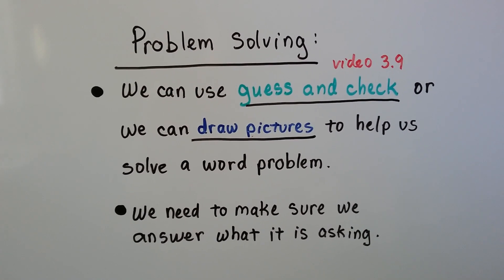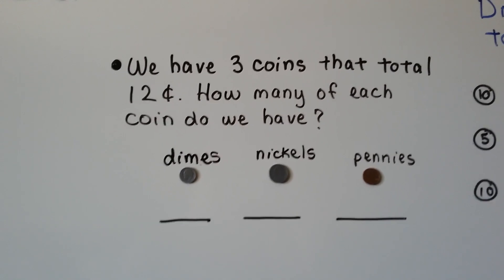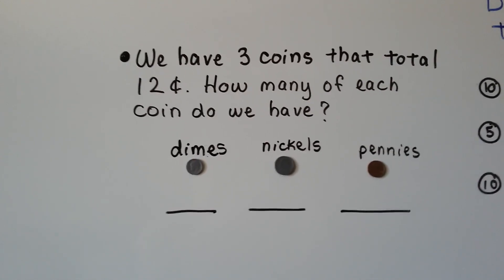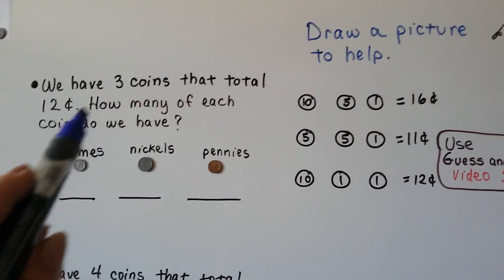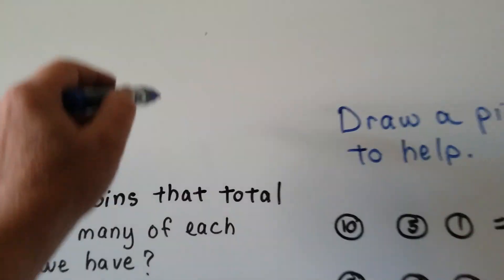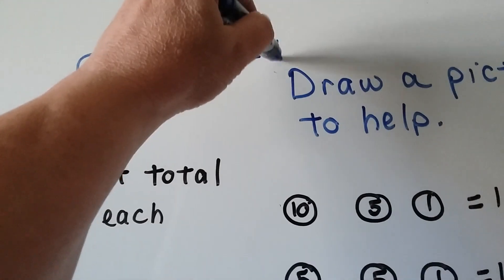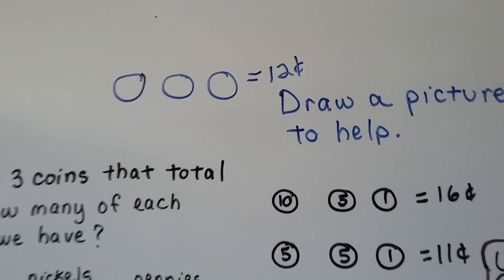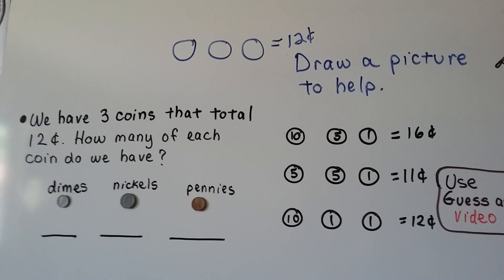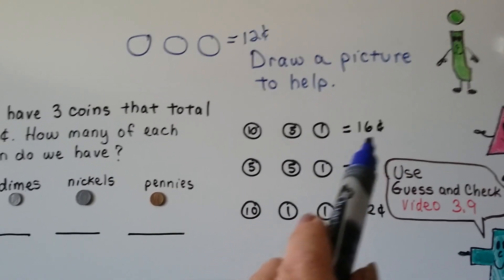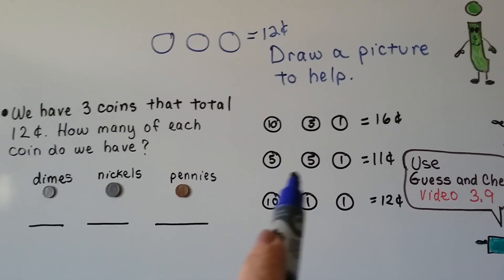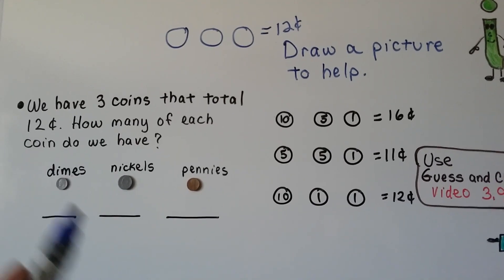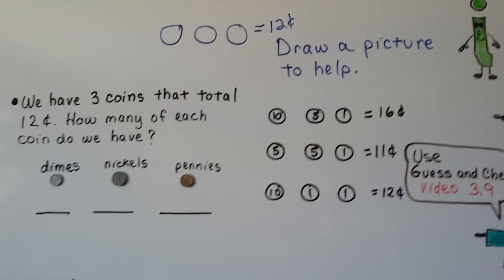We need to make sure we answer what it is asking. Here's our first one: we have three coins that total twelve cents. How many of each coin do we have? We can guess and check, or we can draw a picture to help us. We have three coins and they equal twelve cents, so we draw three circles and put different amounts inside to find twelve cents. We try ten, five, and one — that equals sixteen, too big. We try five, five, and one — that's eleven cents, too small. We try ten, one, and one — and that is twelve cents.